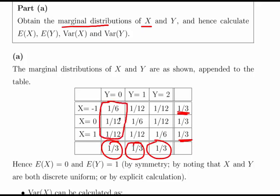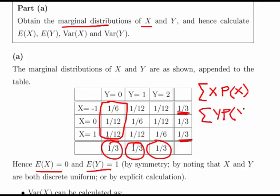Because each outcome is equally probable, the expected value of X equals 0 and the expected value of Y equals 1. Each value of X has probability 1/3 — that's minus 1, 0, and 1. You can work it out using the standard formula, but in this case it can be spotted by inspection. The explicit calculation confirms these answers.